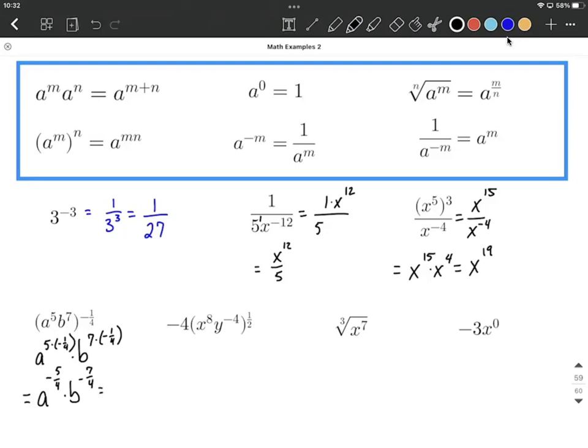And finally, to rewrite these with positive exponents, they're currently up in the numerator. We're going to move each one of these down to the denominator. So we need a placeholder up in our numerator. So we'll put a 1 up there. We'll have a to the positive 5/4ths, b to the positive 7/4ths down in our denominator.